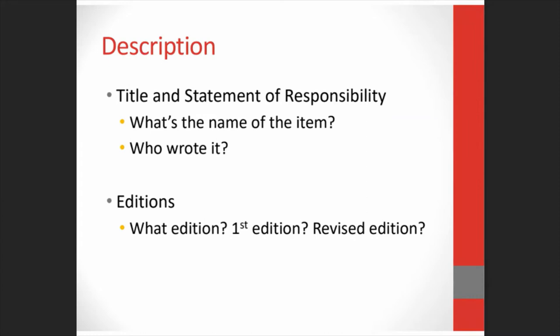We answer some important description questions about the item itself. I usually start with the title and the statement of responsibility. The title is the name of the item, which sounds simple, but sometimes there can be issues — for instance, in a book the title on the title page says one thing and the cover says something different. That's why we have the preferred source rules, but you do record all the titles, just not in the same area. The statement of responsibility is simply who is responsible or who created it — in the case of books, it's usually the author, but you can also have illustrators, translators, and editors.